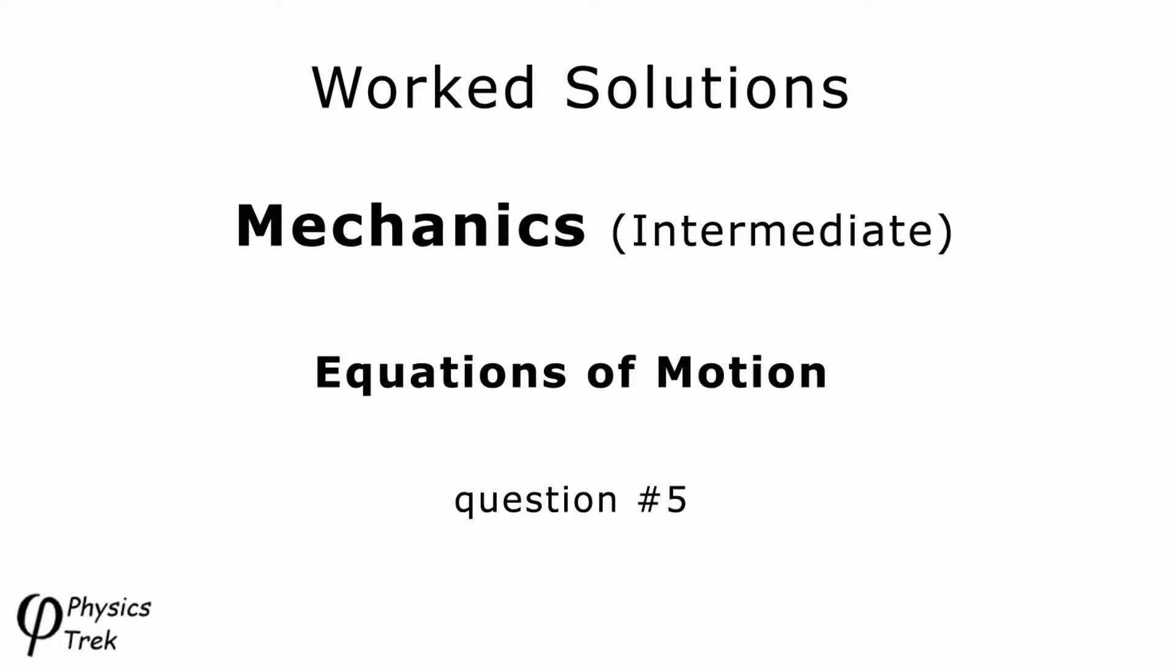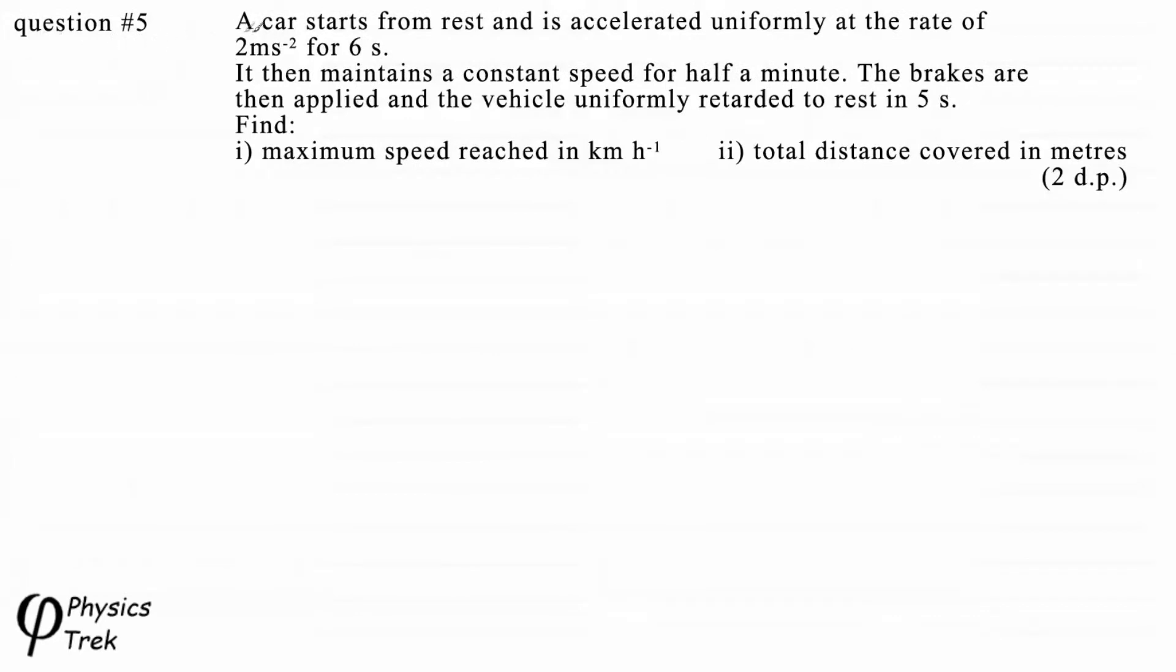So let's move on. Here is our question. Question 5: A car starts from rest and is accelerated uniformly at the rate of 2 m/s² for 6 seconds. It then maintains a constant speed for half a minute. The brakes are then applied and the vehicle uniformly retarded to rest in 5 seconds. Find: 1) the maximum speed reached in km/h, and 2) the total distance covered in meters, answer to two decimal places.